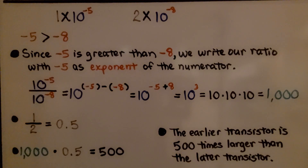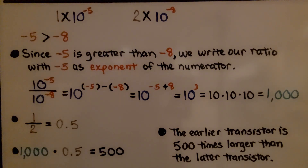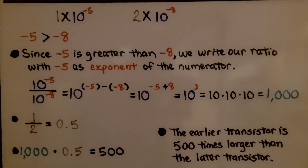The first thing we do is compare the powers of ten. We have negative five compared to negative eight. Negative five is closer to zero, so it's greater. Since negative five is greater than negative eight, we write our ratio with negative five as the exponent of the numerator over ten raised to the negative eighth.